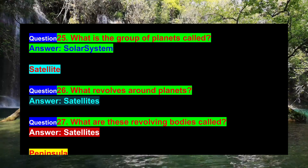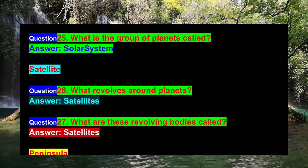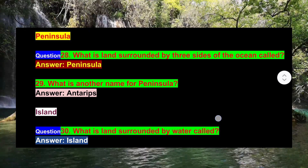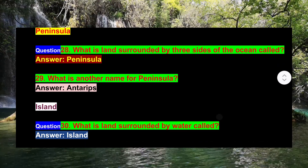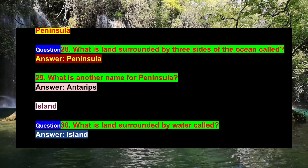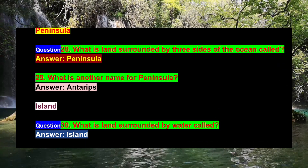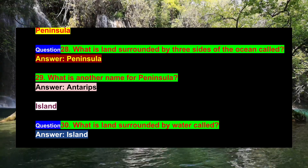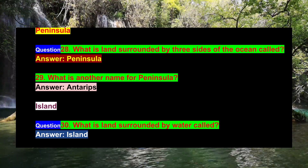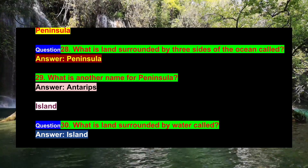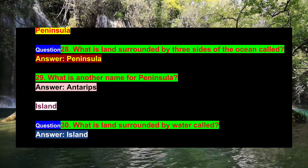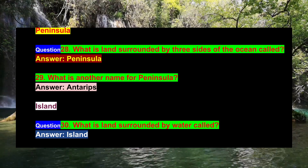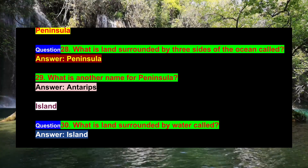Question 27: What are these revolving bodies called? Answer: Satellites. Question 28: What is land surrounded by three sides of ocean called? Answer: Peninsula. Question 29: What is another name for Peninsula? Answer: Antharip. Question 30: What is land surrounded by water called? Answer: Island.